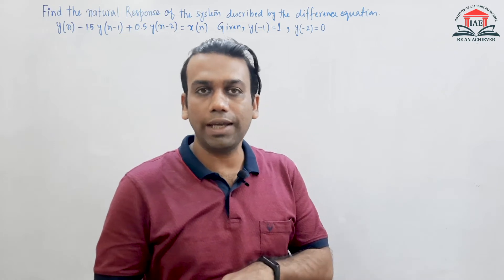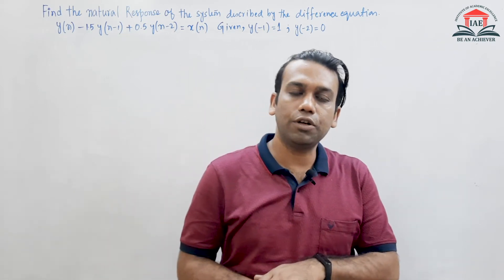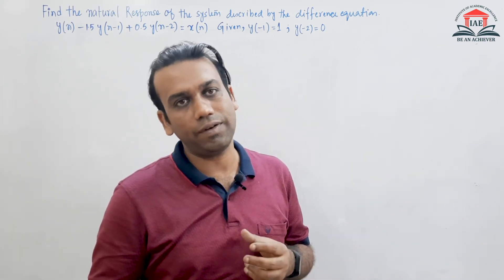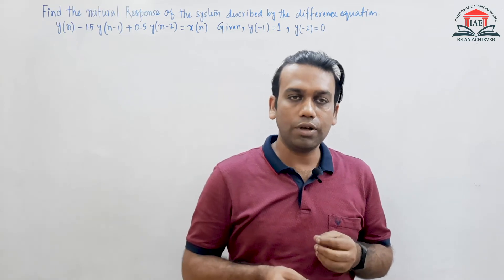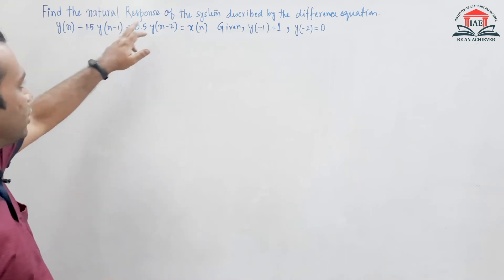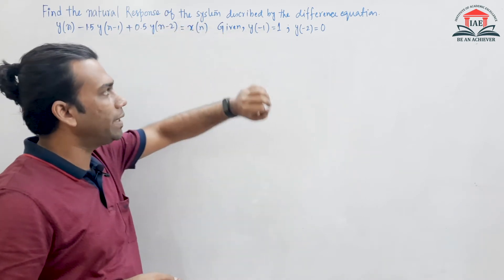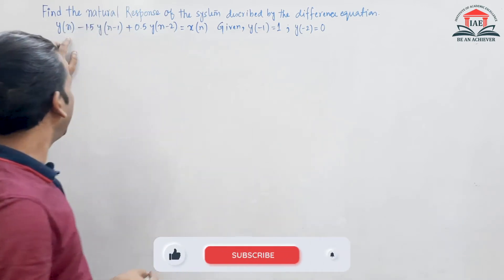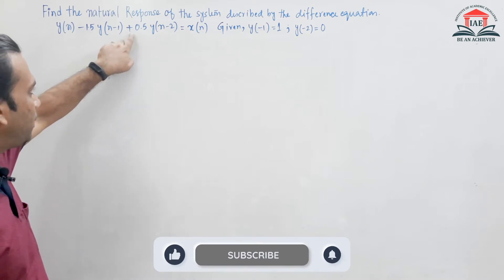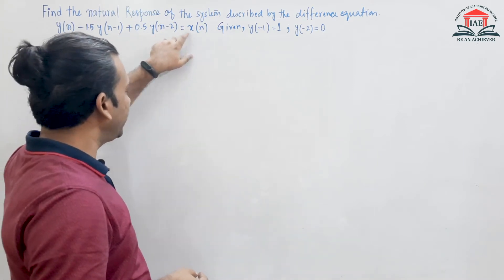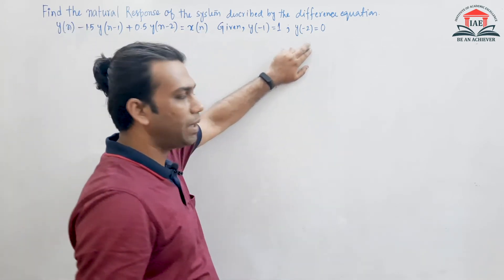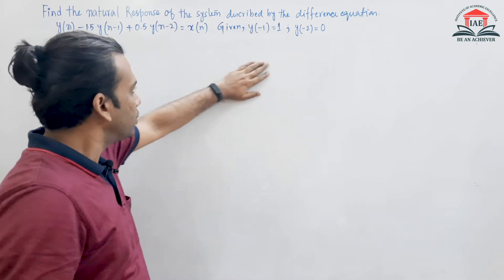Hello students, welcome to IAE. In this video we are going to discuss how to find the natural response of a discrete time system. Find the natural response of a system described by the difference equation: y(n) - 1.5·y(n-1) + 0.5·y(n-2) = x(n), given y(-1) = 1 and y(-2) = 0.